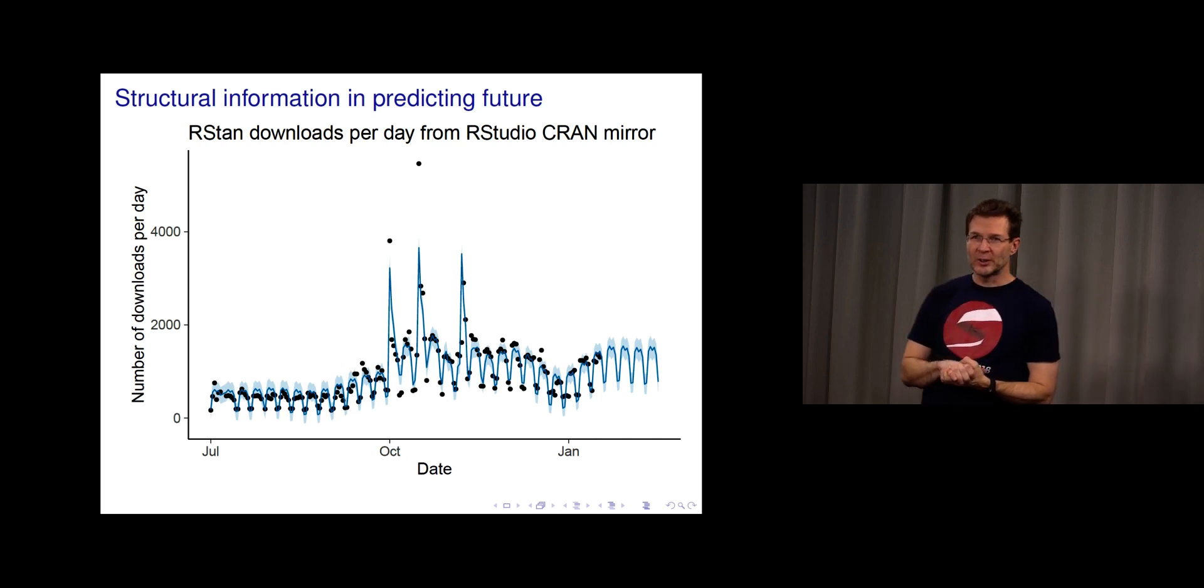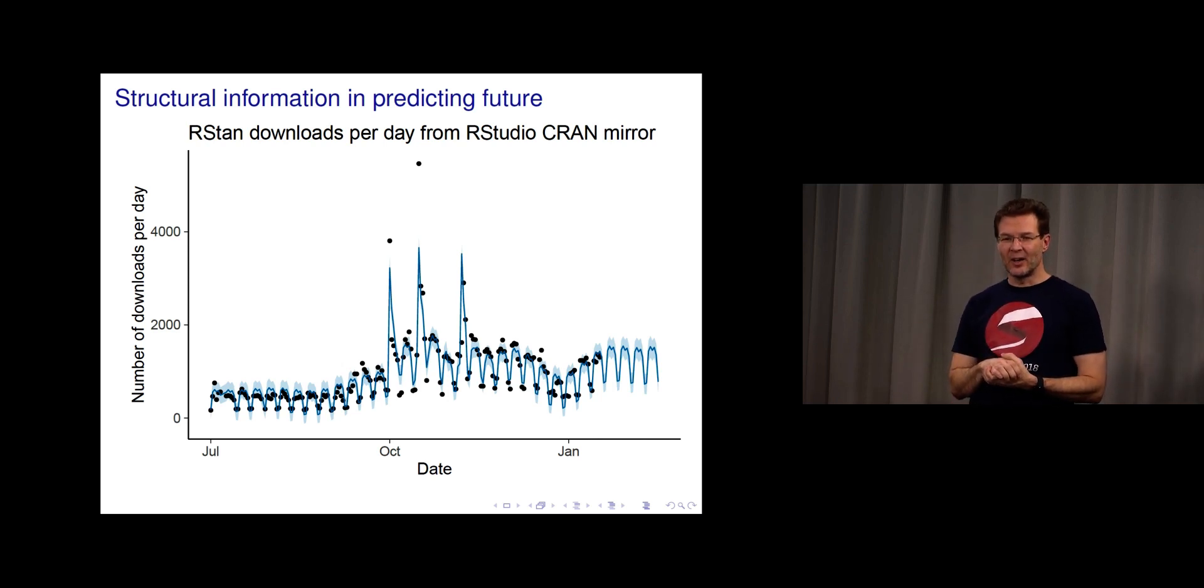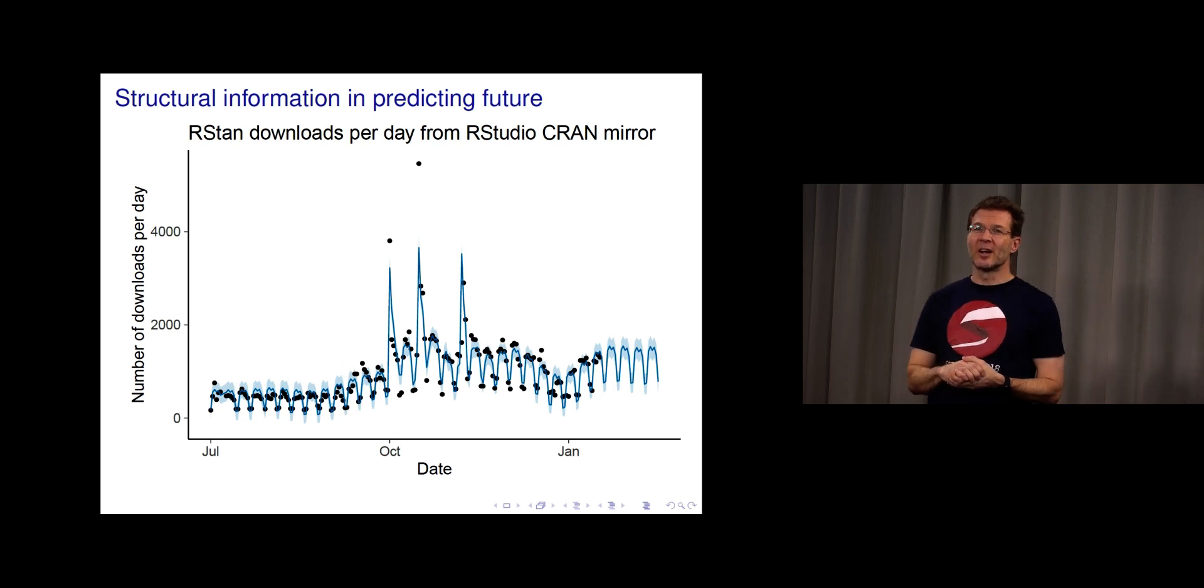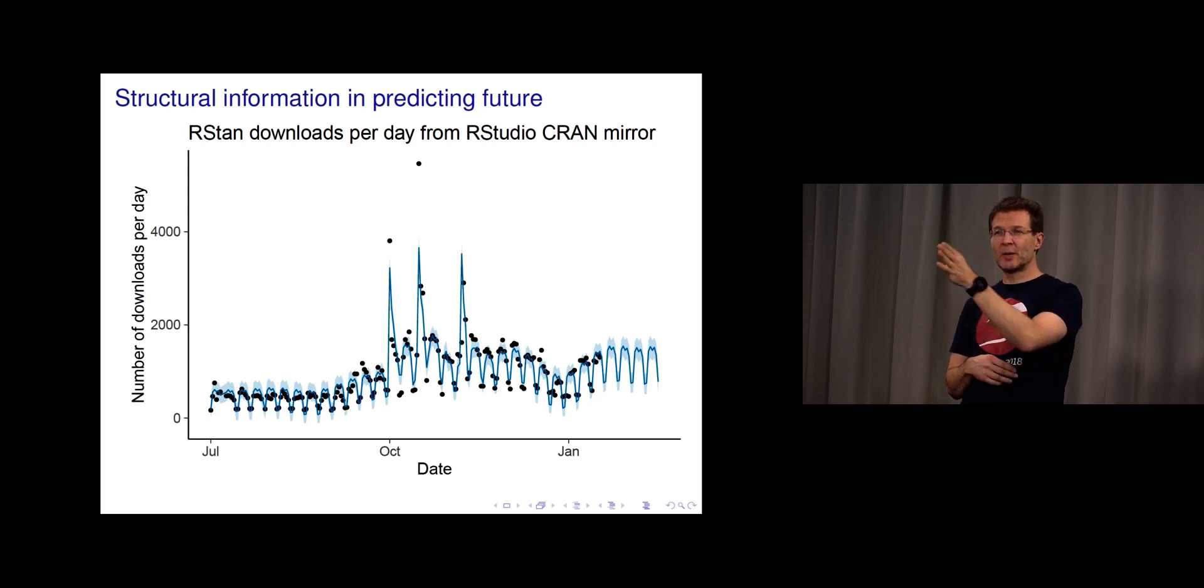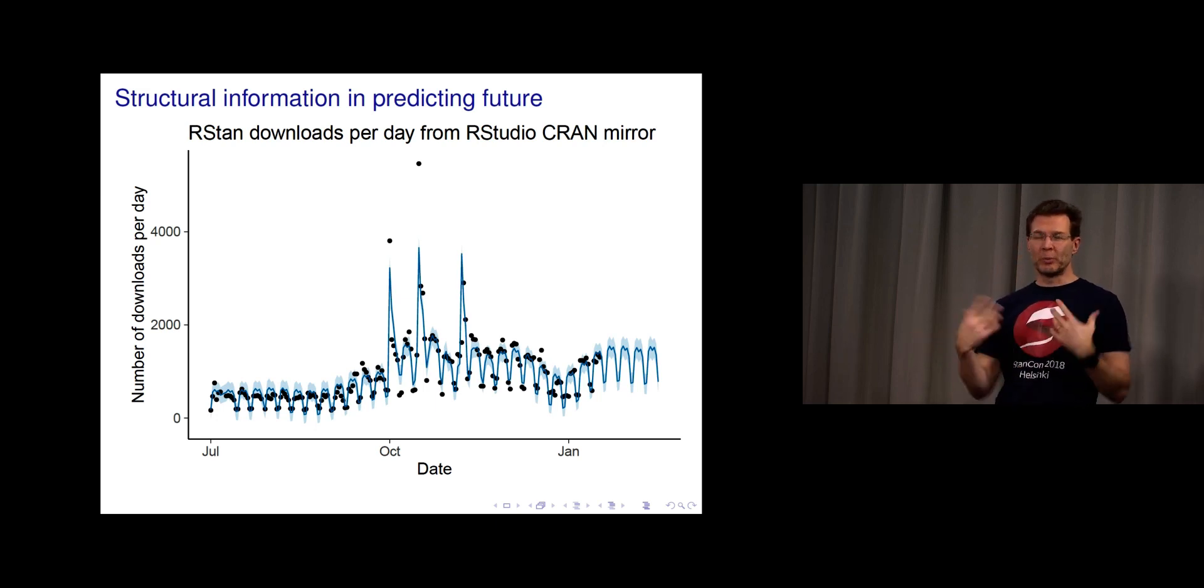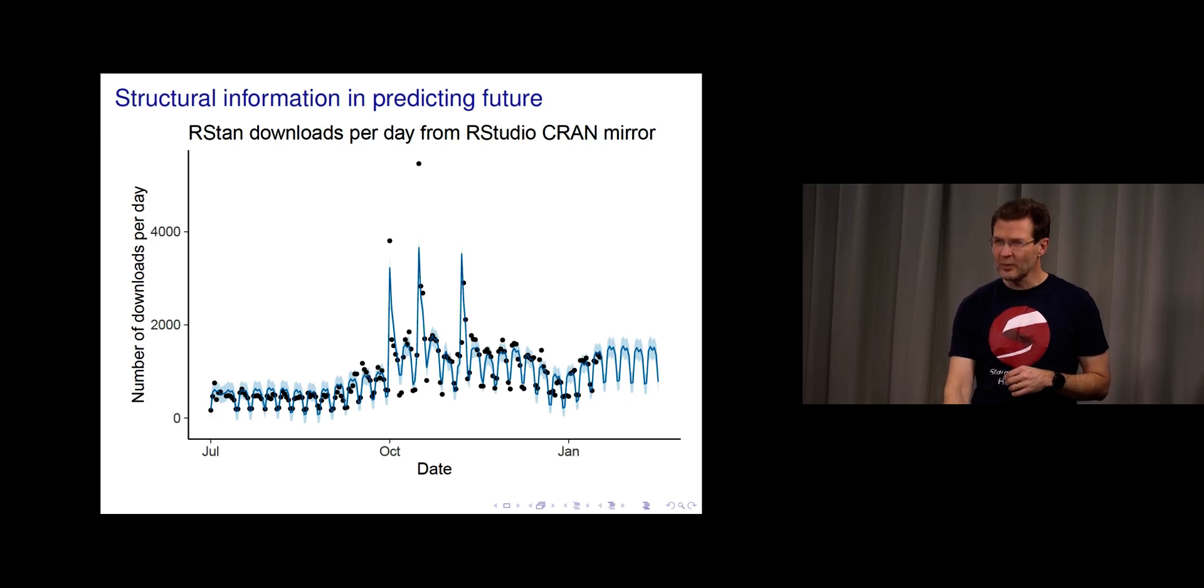I can zoom closer, starting from beginning of last July. You can see the blue line is going close to the black dots, and it's also predicting in the future. So we have now a bit more complex model than just one theta predicting color of the chip. Now we have a prediction of how many downloads there would be in the future.